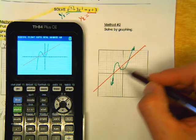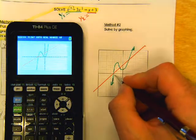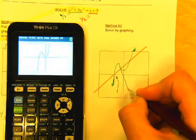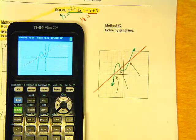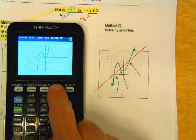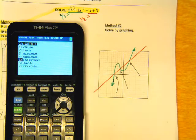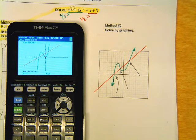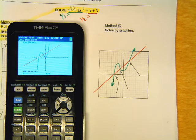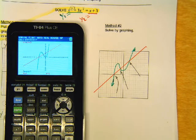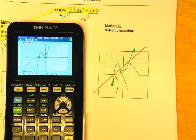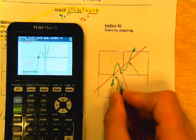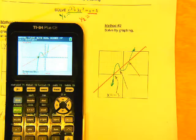Now, once we have both things graphed and sketched, what we want to do is we want to find these intersection points. And the way that we do that is we press second trace and you find number five, intersect. You press enter and you answer three questions. First curve, enter. Second curve, enter. And when it says guess, you move the cursor near the intersection point. Press enter. And the first intersection is x equals negative three.